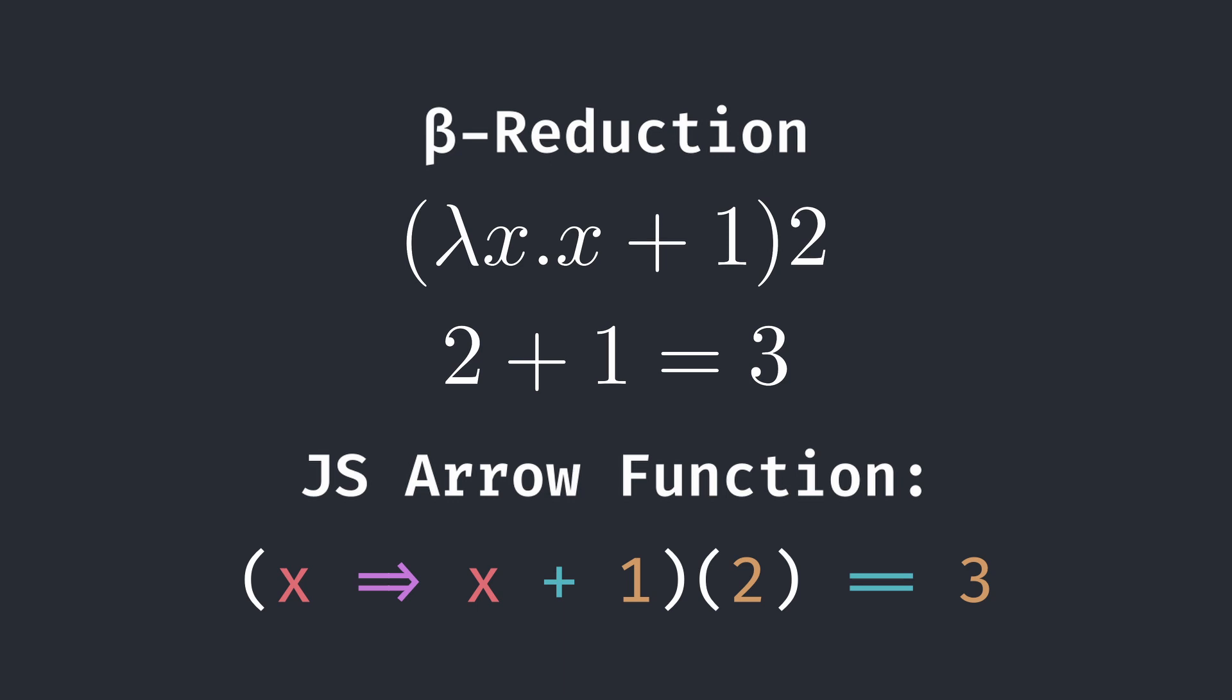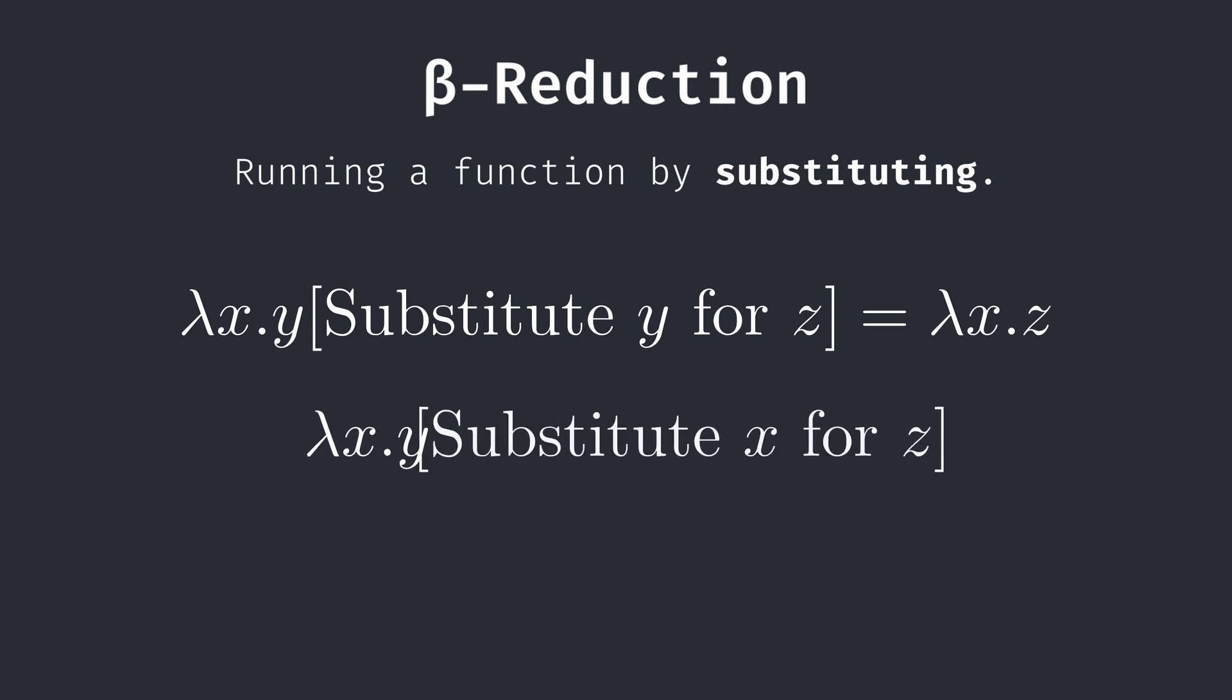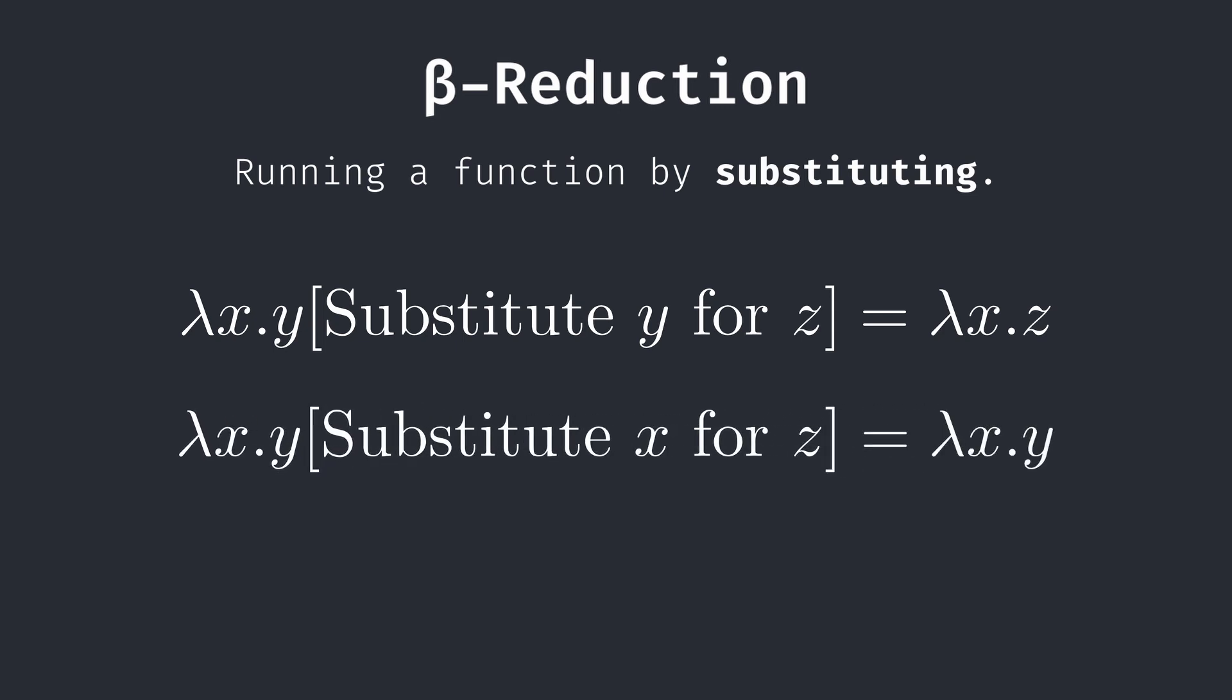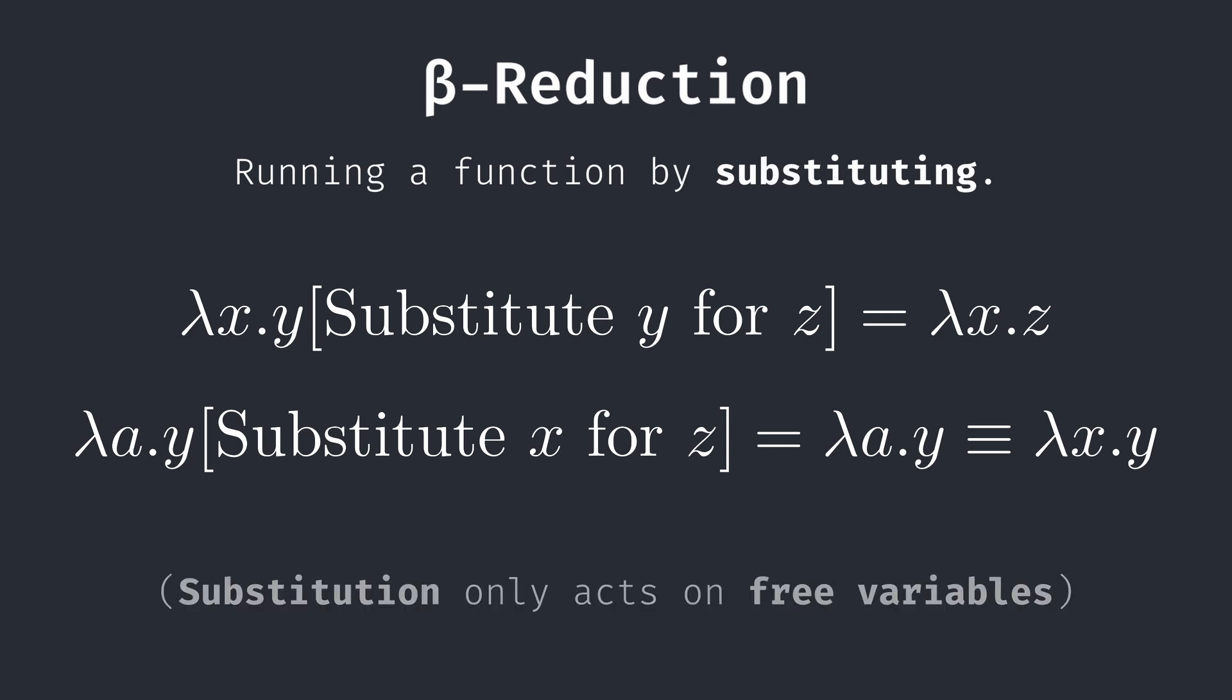However, we must be careful while substituting. Let's take the function lambda x y. If, during beta reduction, we need to substitute y for z, this expression simply becomes lambda x z. However, if we're substituting x for z, it will remain lambda x y. This is because x is a bound variable or a placeholder function parameter. Let's rename the abstraction with alpha conversion. Now, we can see why our substitution doesn't have an effect.